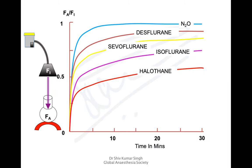Looking at the alveolar-to-inspired concentration ratio across various agents, it is reached very quickly with nitrous oxide and desflurane, but takes longer with enflurane, isoflurane, and halothane. This depends on the blood-gas solubility of the agents. Nitrous oxide has a blood-gas solubility of 0.42 and desflurane is 0.45 — both very low — whereas halothane and isoflurane are higher. So the washout of halothane and isoflurane is slower compared to nitrous oxide and desflurane.